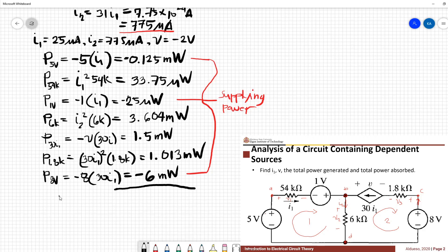So the total power supplied, let's label this as P_TS, is just equivalent to P_5V plus P_1V plus P_8V, which is equivalent to 6.15 milliwatts.